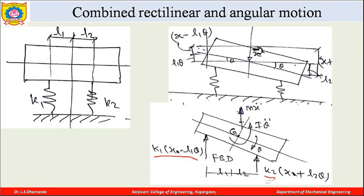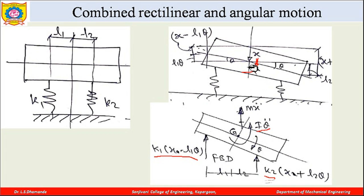Since the block is rotating clockwise, the inertia torque acts anticlockwise and equals I·theta-double-dot, where I is the mass moment of inertia and theta-double-dot is the angular acceleration. At the same time, the linear inertia force in the downward direction is m·x-double-dot.